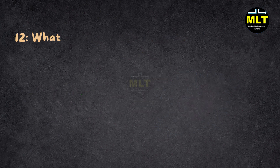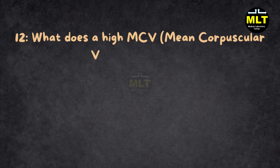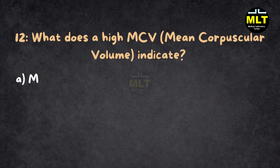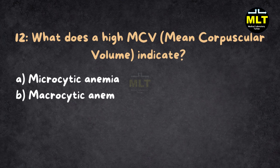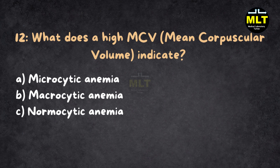MCQ 12. What does a high MCV indicate? A. Microcytic anemia. B. Macrocytic anemia. C. Normocytic anemia. D. Hemolytic anemia.